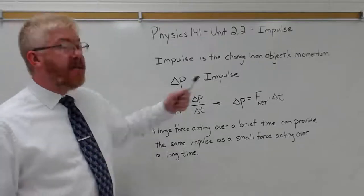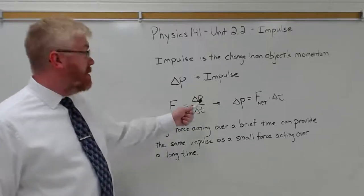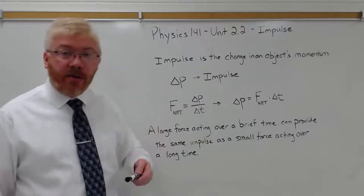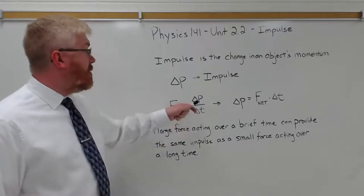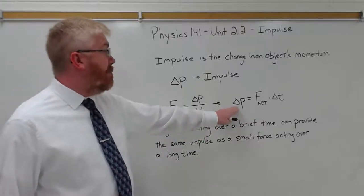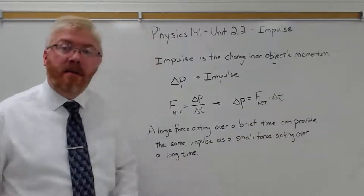So delta P is the impulse. Now we had this equation in our last video. The net force is equal to the change in momentum over the time that momentum has changed. Rearranging this for delta P, multiplying both sides by delta T, we see that the impulse is equal to the net force times the change in time.